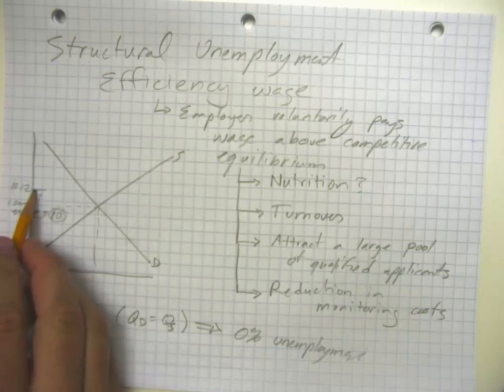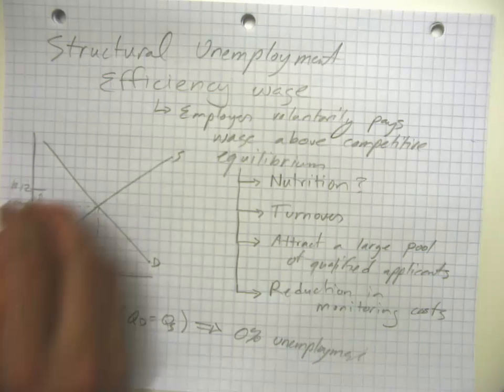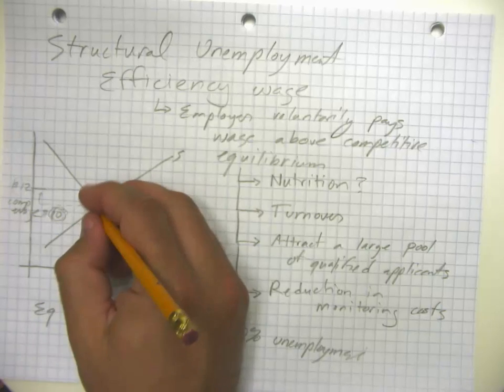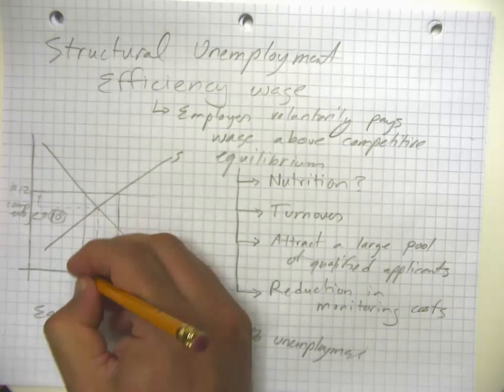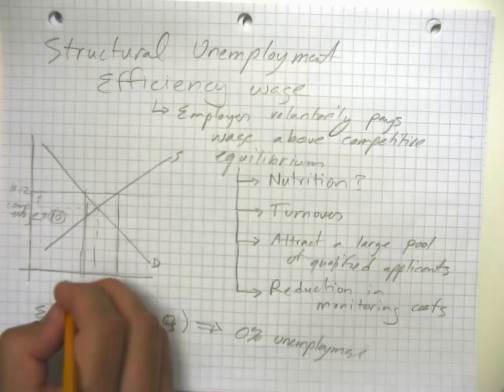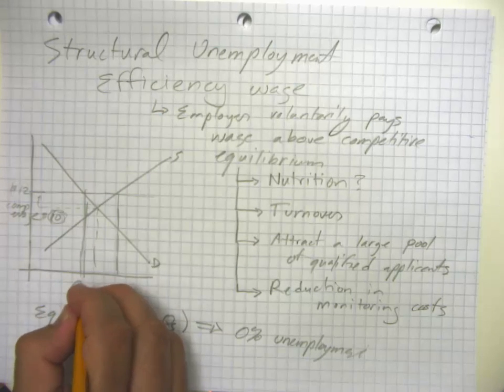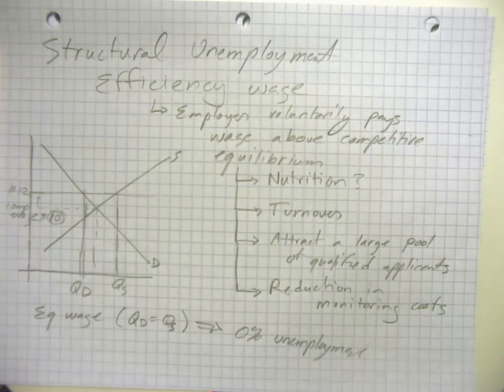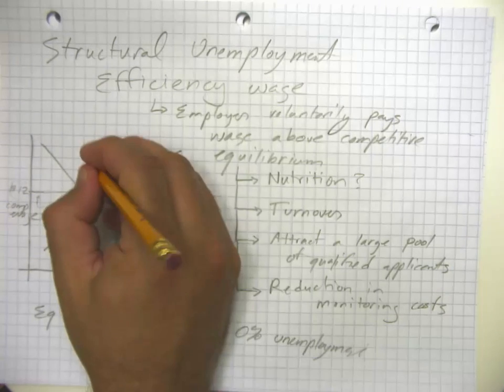Of course, all the other employers are also reacting the same way. So we get employers voluntarily paying this above equilibrium wage. And again, we get in a situation where the quantity of labor demanded is less than the quantity of labor supplied and we get some level of unemployment.